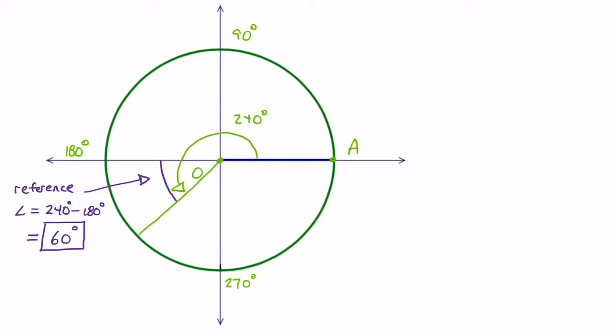To find the coterminal angles, the easiest thing is just to add 360. If you want to subtract 360, you can do either add 360 or subtract 360 from your angle in standard position. But I always just add 360 a couple times. So 240 plus 360 is 600 degrees.